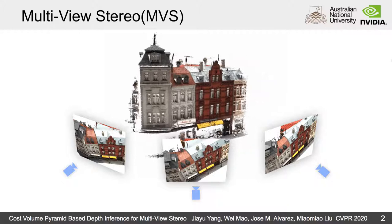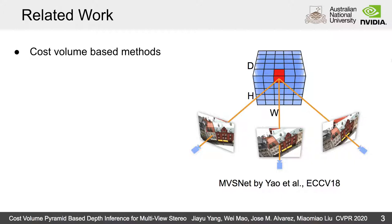Recent learning-based MVS methods build a cost volume on the reference camera frustum for depth inference. Each voxel of the cost volume is the matching cost of corresponding features projected from the reference view and all source views. The key insight of this method is photometric consistency, which means that projected points of the same 3D point on each view should have similar appearance.